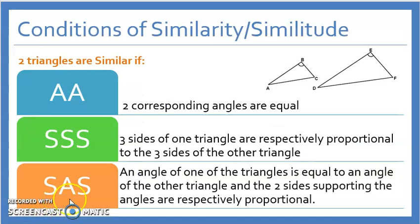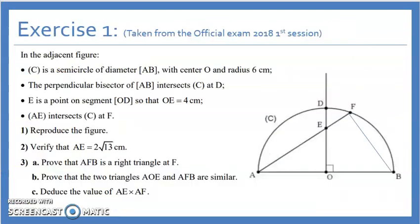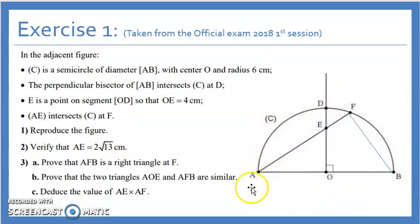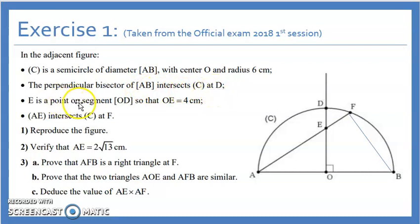Most of the time you'll be using the angle-angle method. Now we'll do an exercise taken from the official exams — 2018 first session. Consider this figure: C is a semicircle of diameter AB and center O and radius 6 cm. The perpendicular bisector of AB intersects C at D. E is a point on segment OD so that OE equals 4 cm, and line AE intersects C at F. Pause the video and read it carefully.